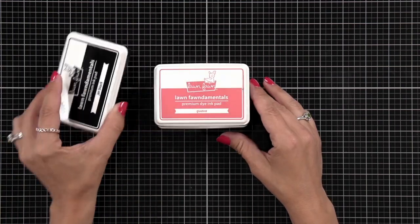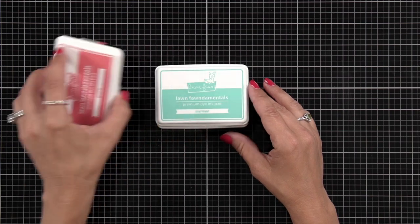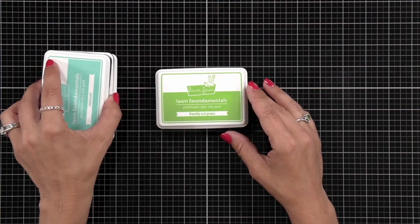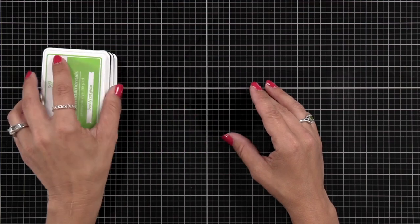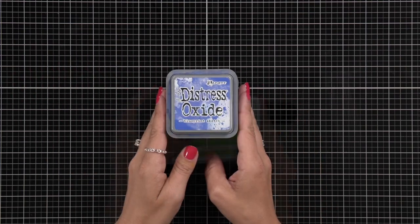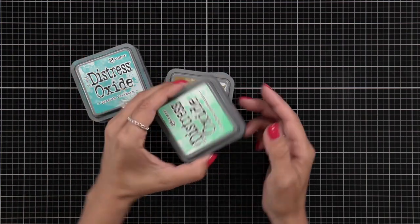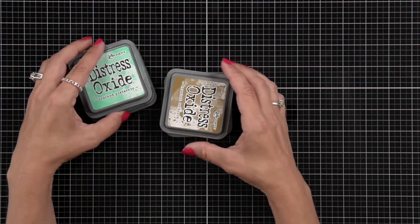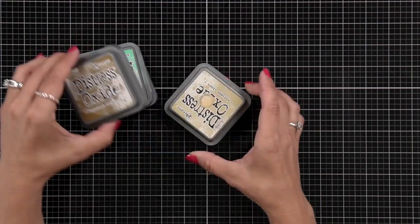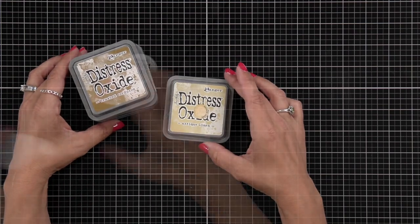For colors of ink I have Jet Black to do my alcohol ink coloring, Guava, Merman, and Freshly Cut Grass. For Oxide inks I have Blueprint Sketch, Peacock Feathers, and Cracked Pistachio. I'm also going to be using Brushed Corduroy and Antique Linen.